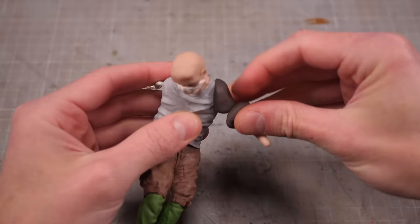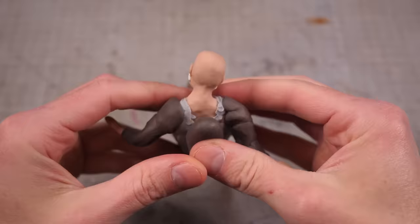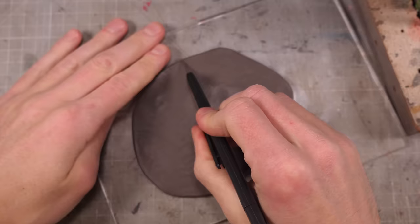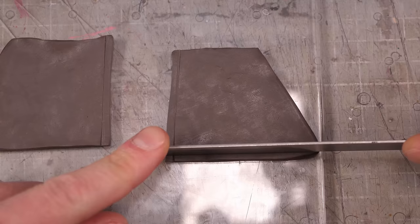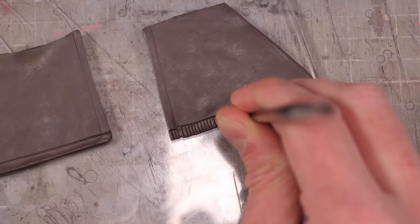To make his leather jacket I'll start by unleathering his arms shoulders and back. I can then roll out a flat sheet of clay that I can cut to size and add the little details that will be too tricky to add once it's in place.